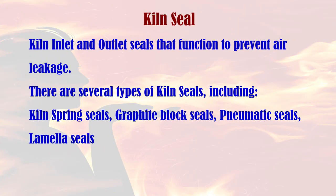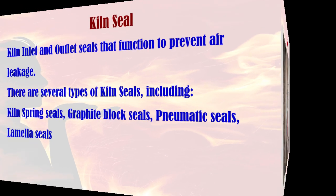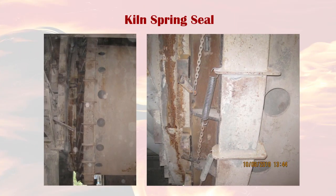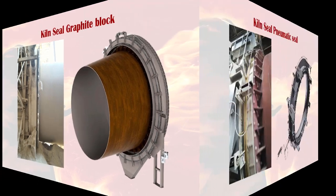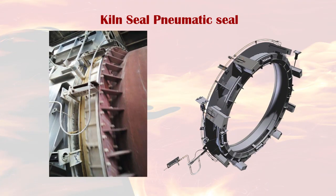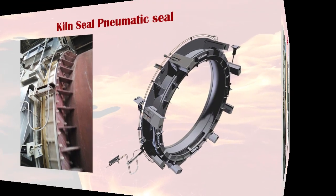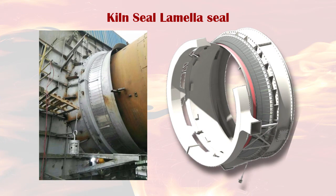5. Kiln seal, whose function is to prevent air leakage at the kiln inlet and kiln outlet. There are several types of kiln seals, including kiln spring seals, graphite block seals, pneumatic seals, and lamella seals, as seen in this example image.